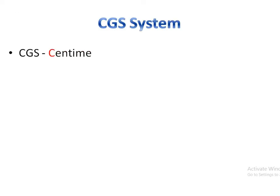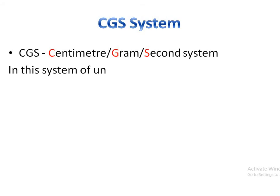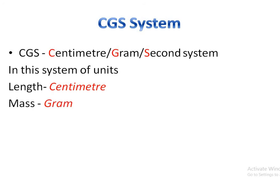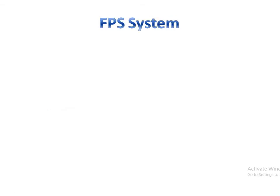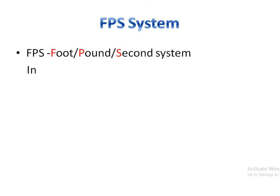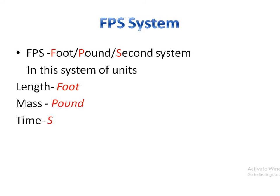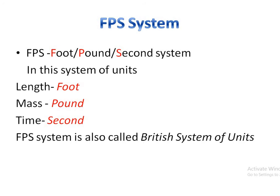CGS system stands for Centimetre, Gram, and Second system. In this system, length is measured in centimetres, mass in grams, and time in seconds. Next is the FPS system, which stands for Foot, Pound, and Second system. In FPS, length is measured in feet, mass in pounds, and time in seconds. The FPS system is also called the British system of units.